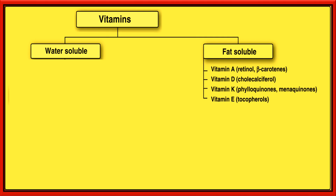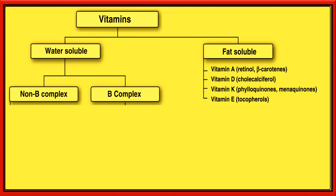The fat-soluble vitamins are vitamin A, D, K, and E. The chemical name of vitamin A is retinol or beta-carotene. The chemical name of vitamin D is cholecalciferol. Vitamin K's chemical name is phylloquinones and menaquinones. While vitamin E is called tocopherols.